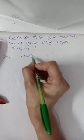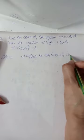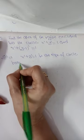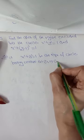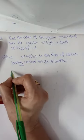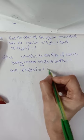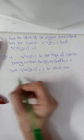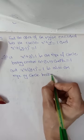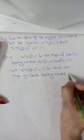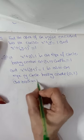x² + y² = 1 is an equation of a circle having center at the origin and radius 1. And x² + (y - 1)² = 1 is also an equation of a circle having center at (0, 1) and radius 1.